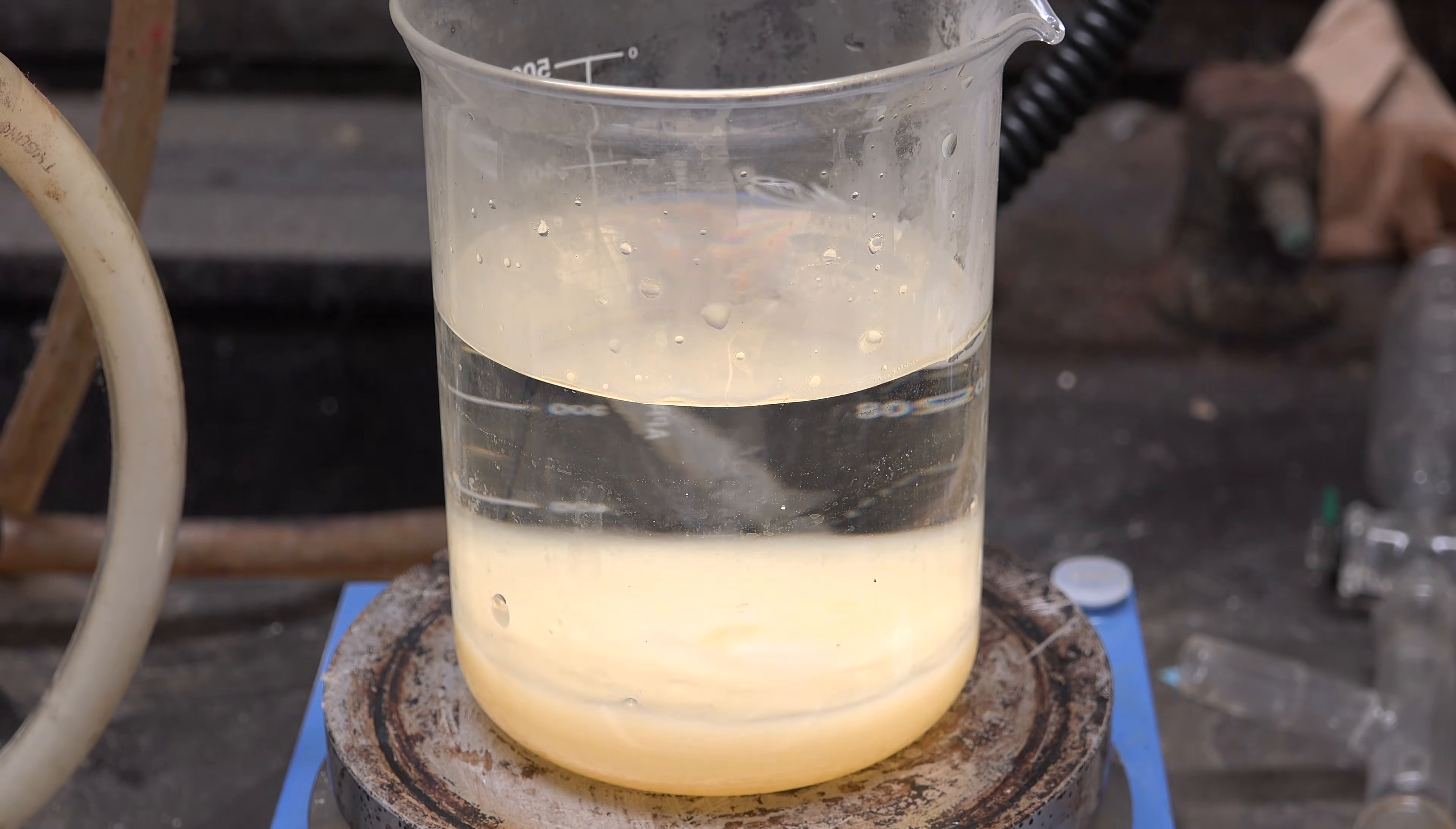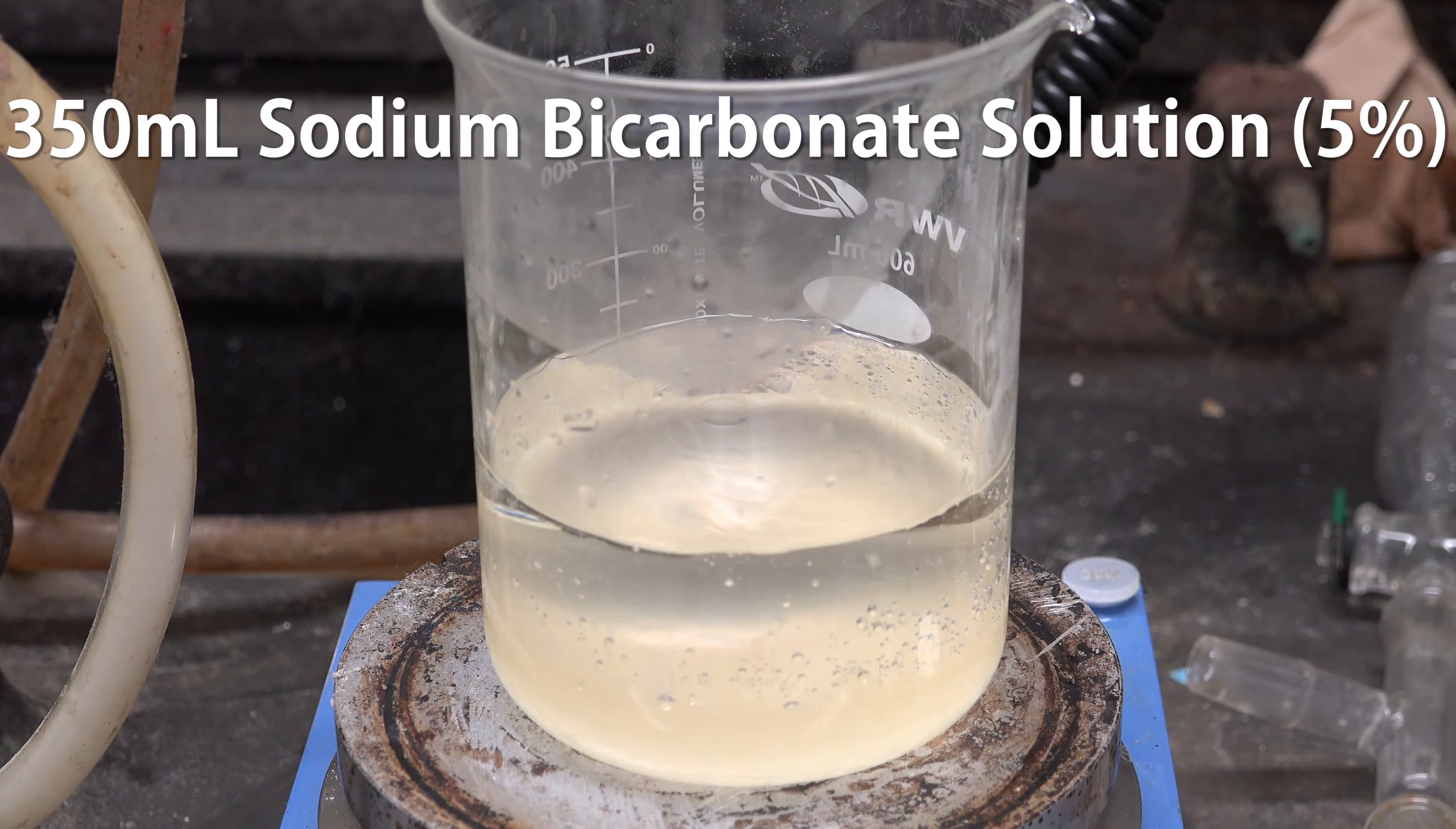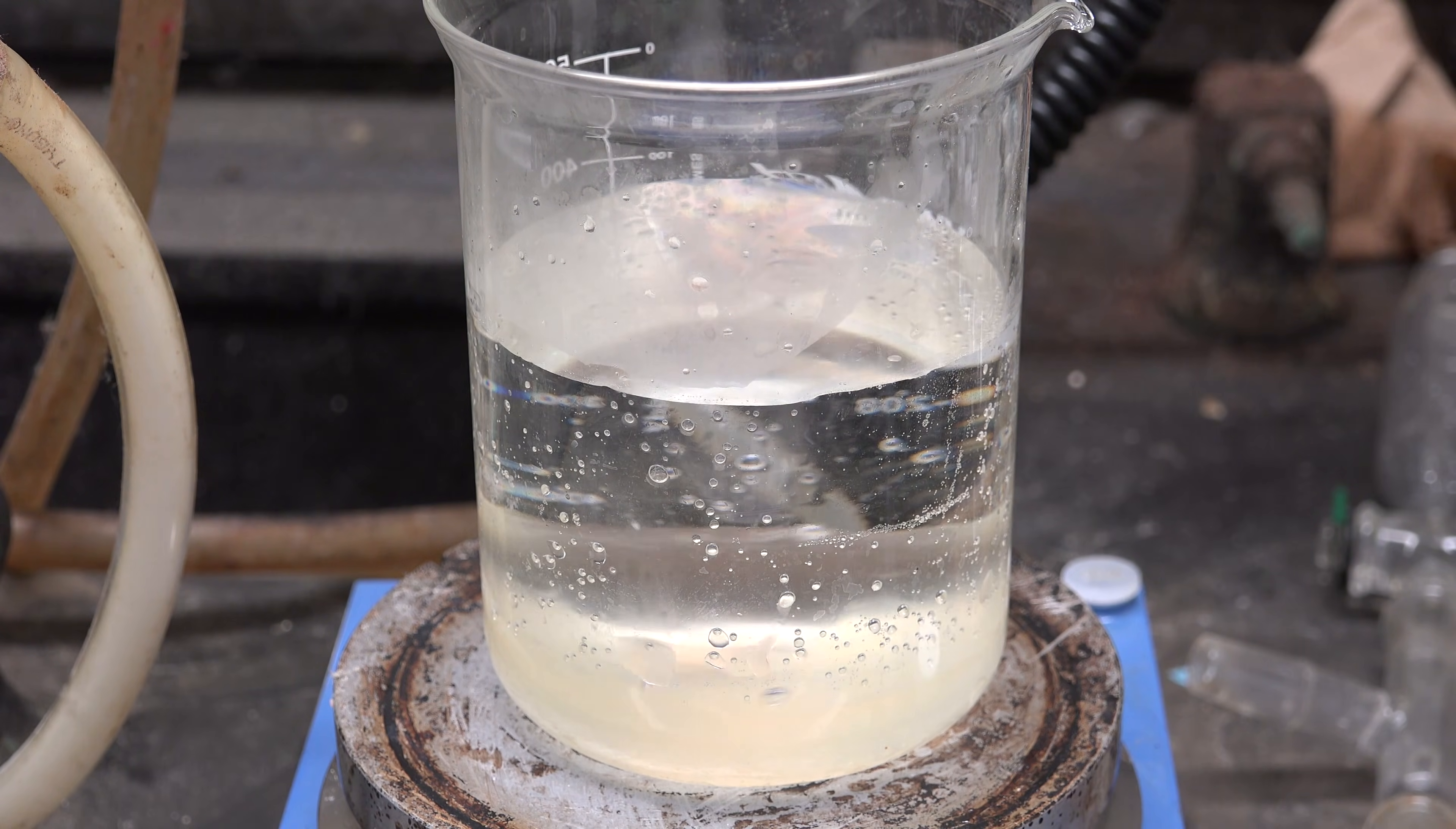Stir the mixture for 10 minutes to absorb any dissolved hydrogen bromide and ethanol that may have distilled over. Now decant off the supernatant. Add in a 5% solution of sodium bicarbonate, basically 5g of sodium bicarbonate and 95g of water. I'm using 350 mL worth. Stir the solution for 10 minutes or so until it clears.